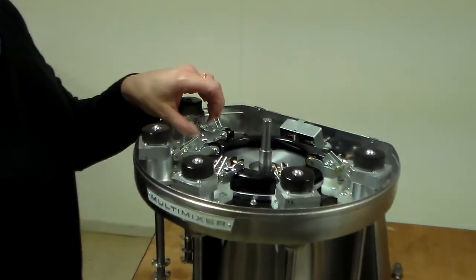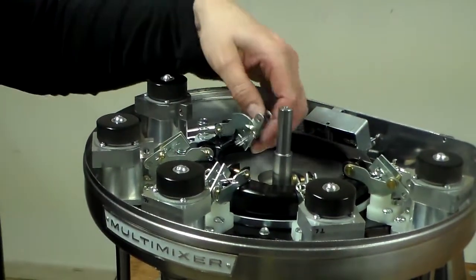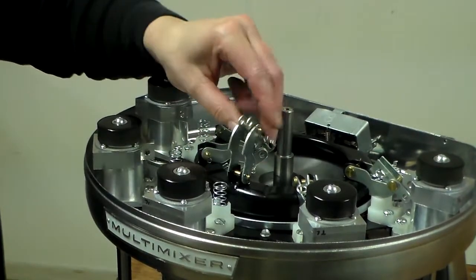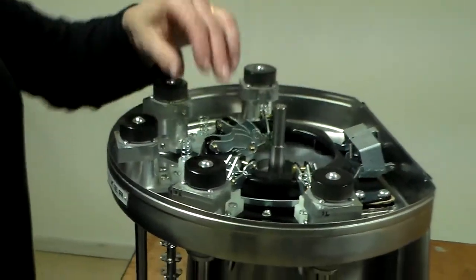Next, rotate the linkage out of the way so that we may lift the switch ring assembly.